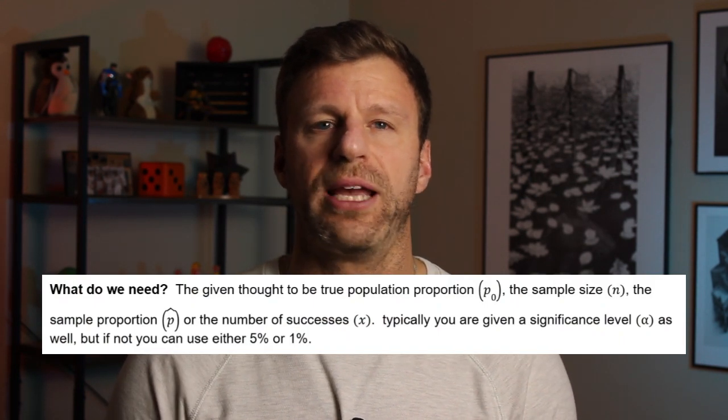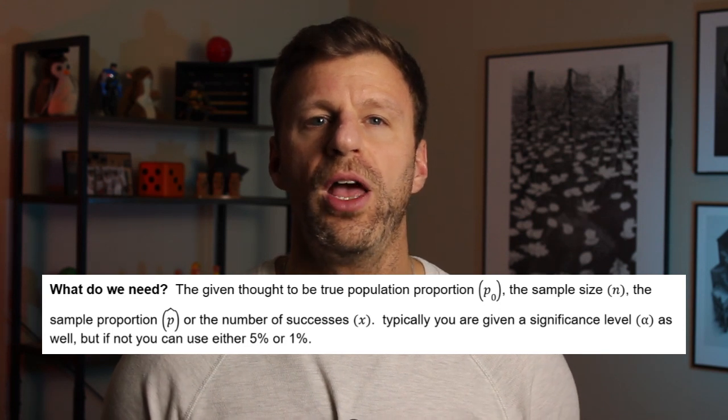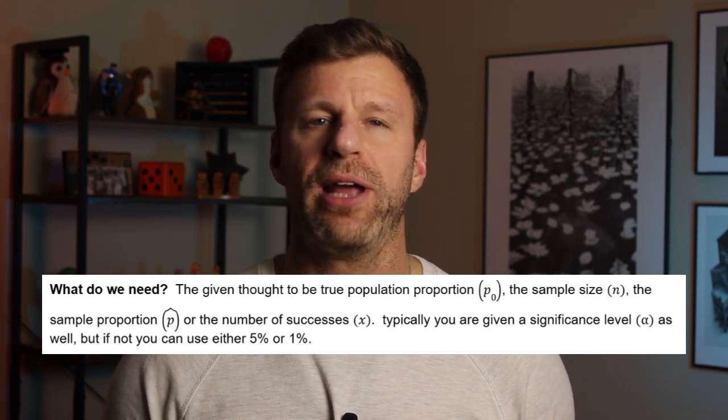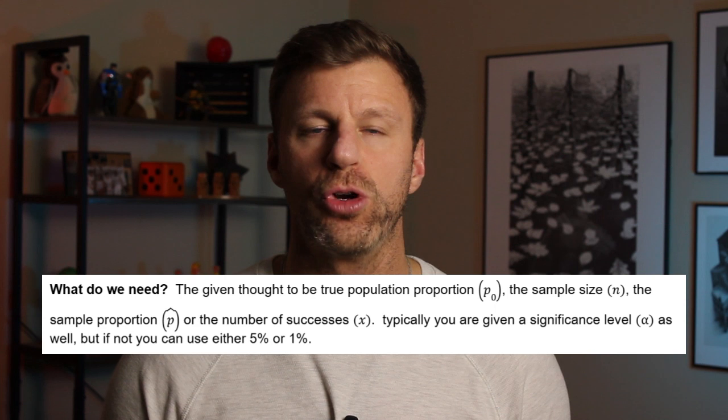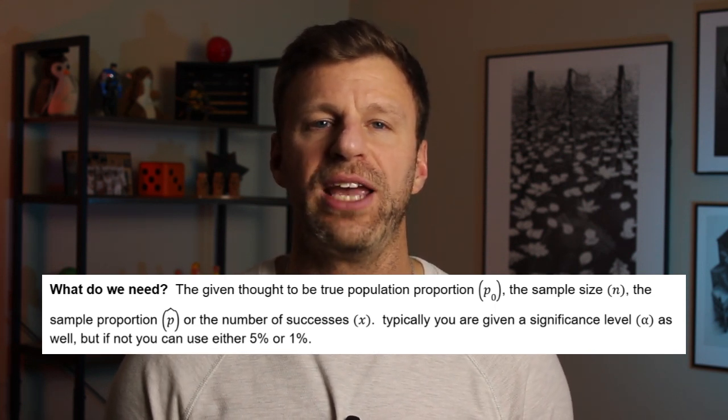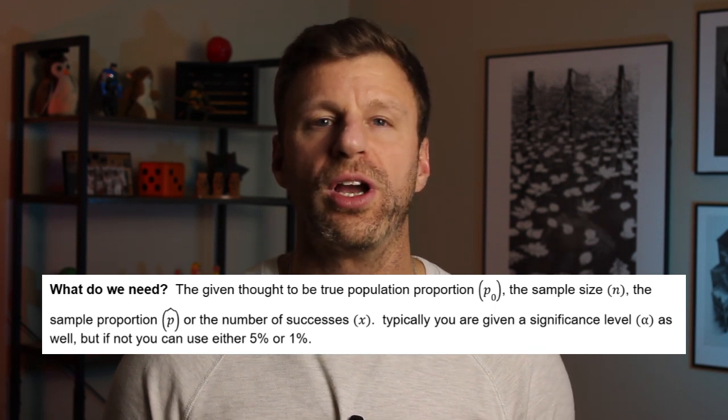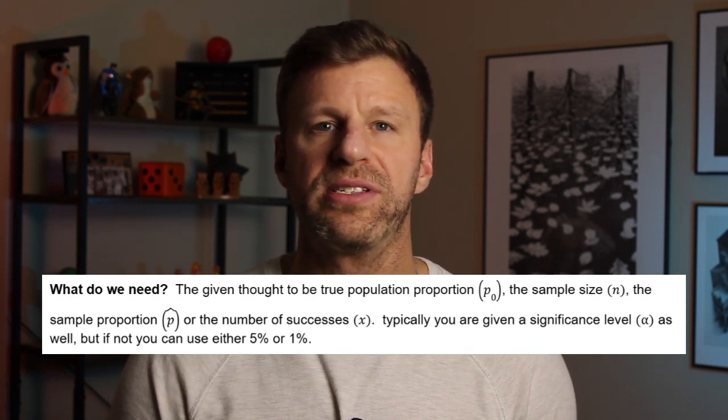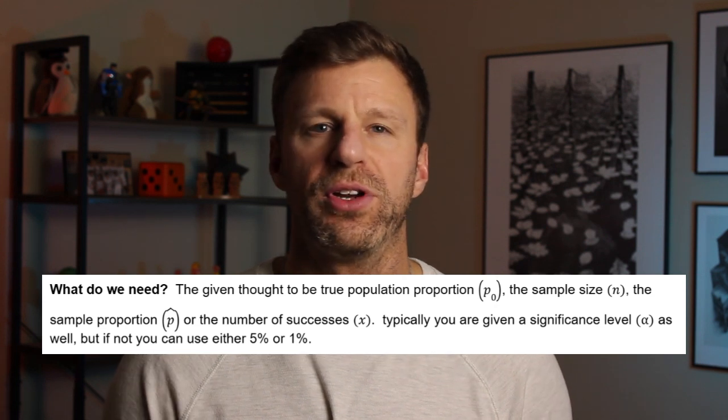Then you're going to see a section that talks about exactly what you need to conduct a one-sample Z test for a population proportion. You're going to need P sub zero. P sub zero is the thought to be true population proportion that we're testing in the problem. Then you're going to need your sample size and your sample proportion, or you're going to need X, how many people in the sample were successful for whatever it is you're looking for.